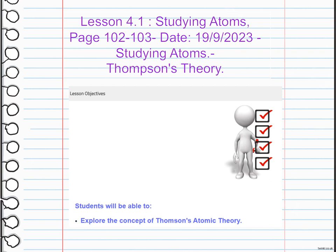Like plums in a pudding, this model — known as the plum pudding model — revolutionized our understanding of atomic structure and laid the groundwork for further discoveries about subatomic particles. J.J. Thomson's theory was a significant step forward in our understanding of the atom.